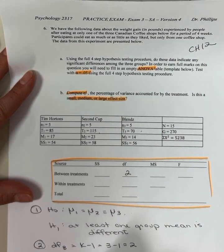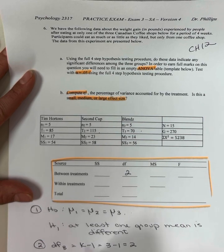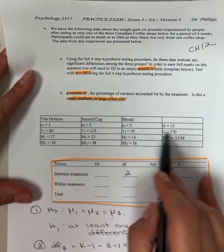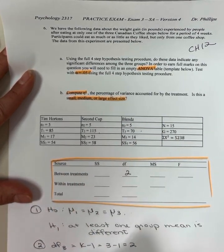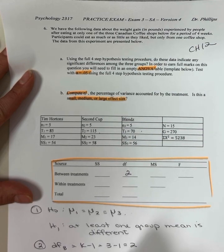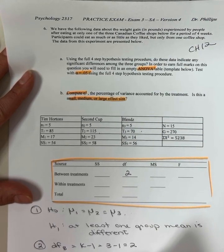Degrees of freedom within is n, big n, not the little n's, the big n, minus k. 15 minus 3, which is 12.